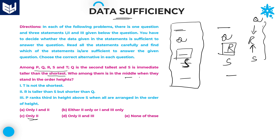The question is asking about the middle person. But you should not directly conclude the answer is only 2, because there is another option: either only 2, or 1 and 3 only. Now I will check statements 1 and 3. Statement 1 says T is the shortest person.